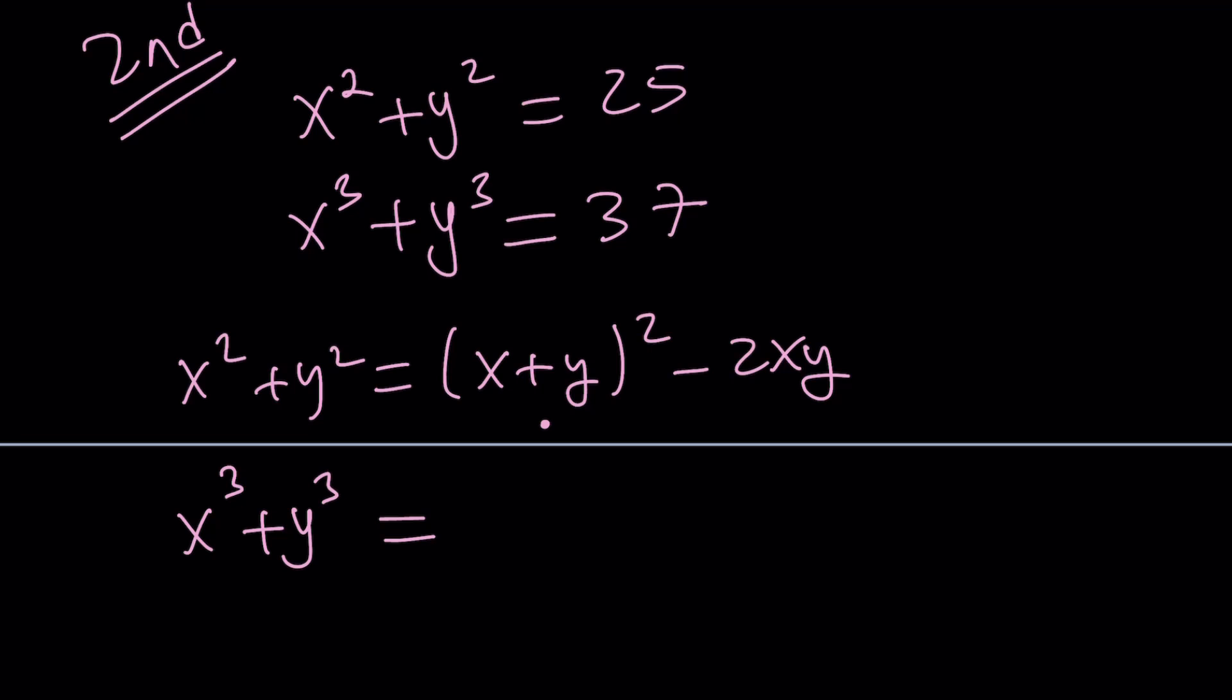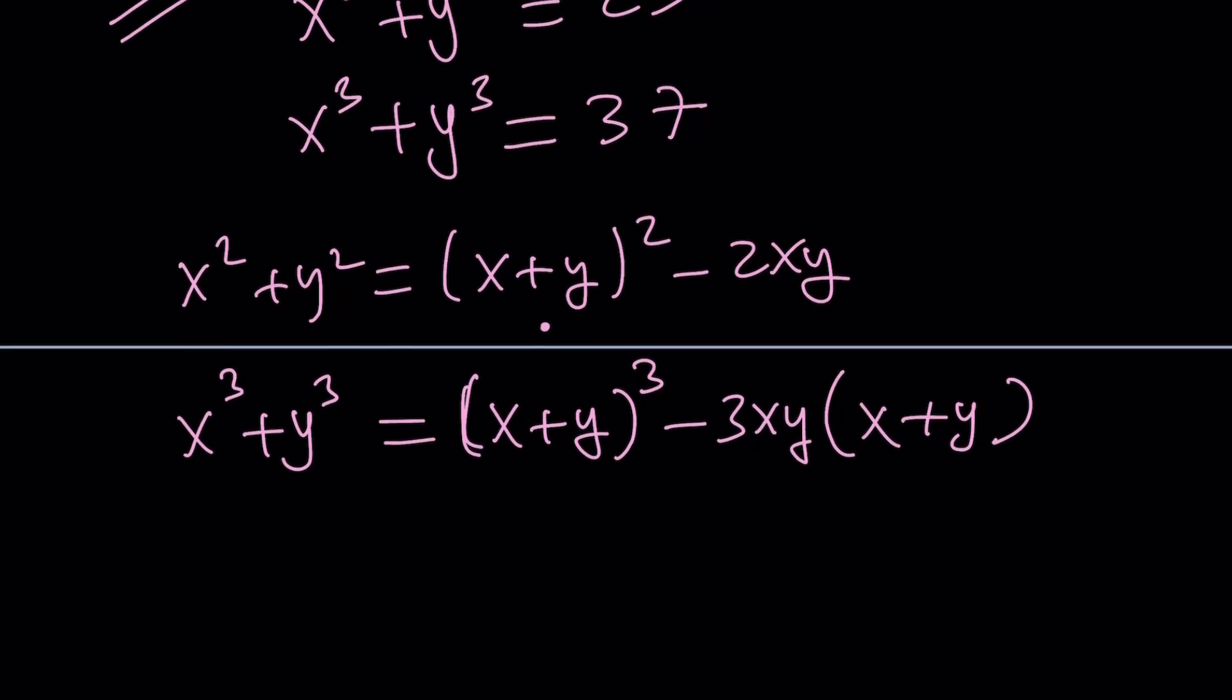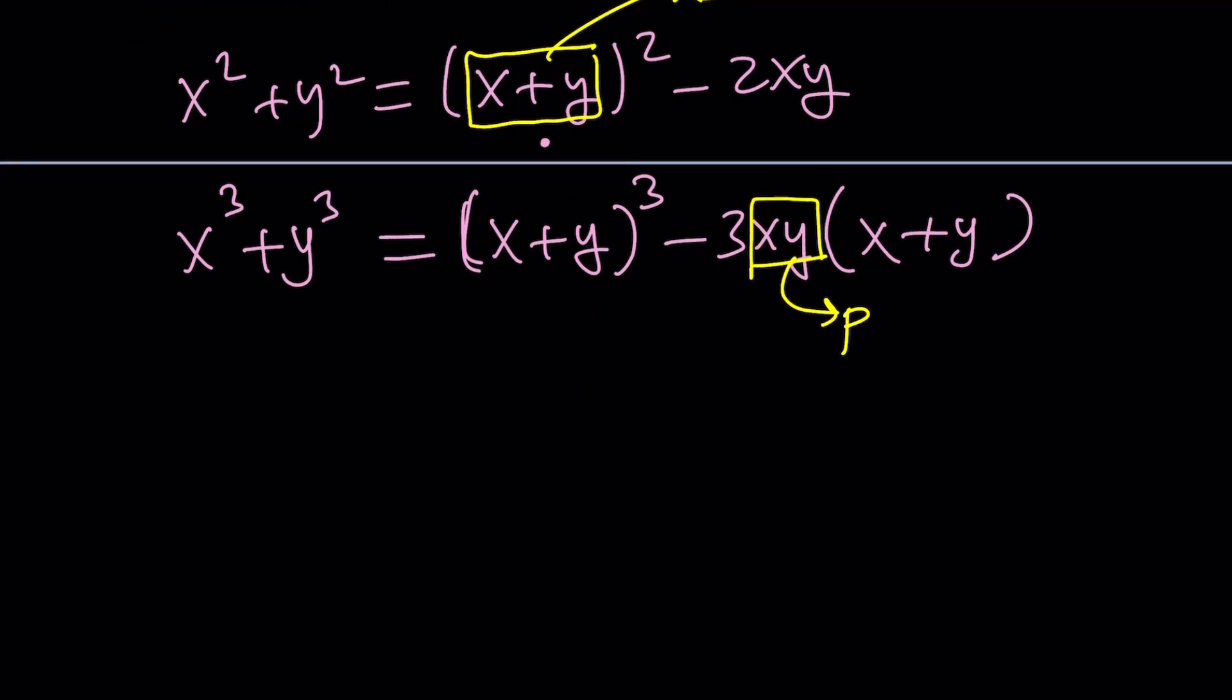And with the cube, I can use something similar. Remember, we use the cubic formula quite a few times. And we can write it that way. This actually helps you solve the cubic equation. Now, we have these two identities, and hopefully you notice that something pops up here: x plus y and xy. So we can go ahead and call them something. How about calling this s for sum and calling this p for product?